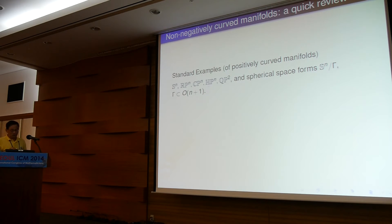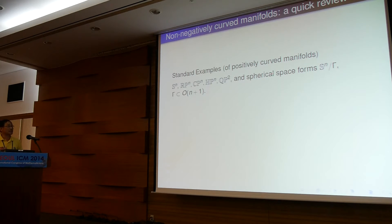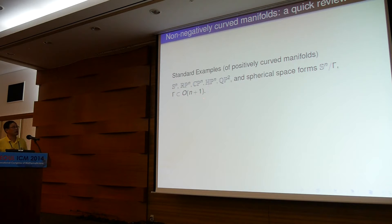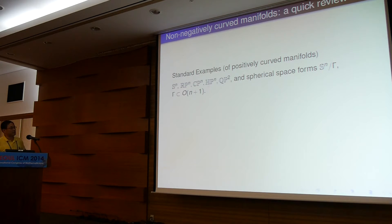The standard examples with positive curvature, besides the sphere and spherical space forms — namely the sphere quotiented by some free subgroup with free action from a subgroup in the orthogonal group — are the rank-1 symmetric spaces: compact projective spaces over real, complex, or quaternionic numbers, or the Cayley plane.